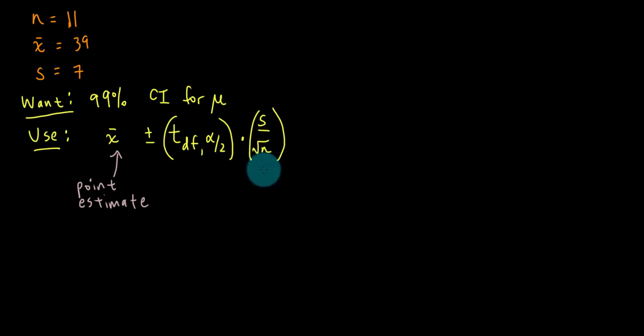We already know s and square root of n, but when we multiply that by this T critical, that's going to get us the margin of error. Let's figure out this T critical value. The degrees of freedom is just n minus 1. So the degrees of freedom is 11 minus 1, which is 10.